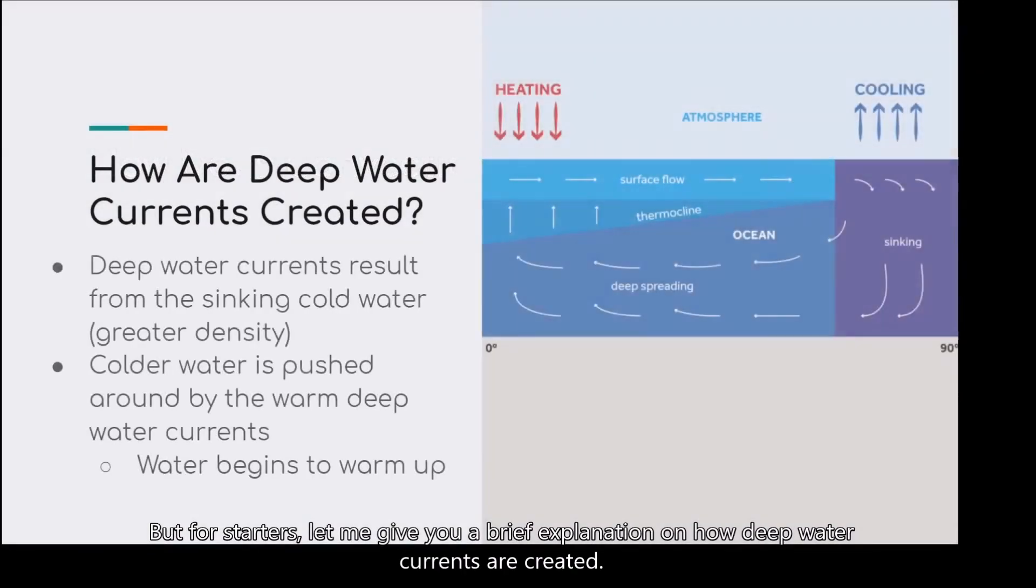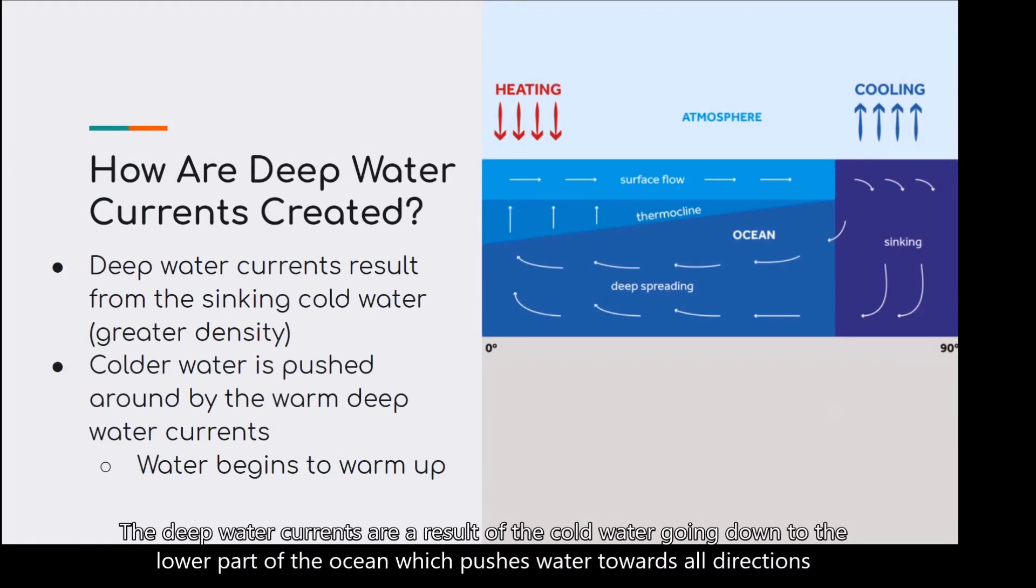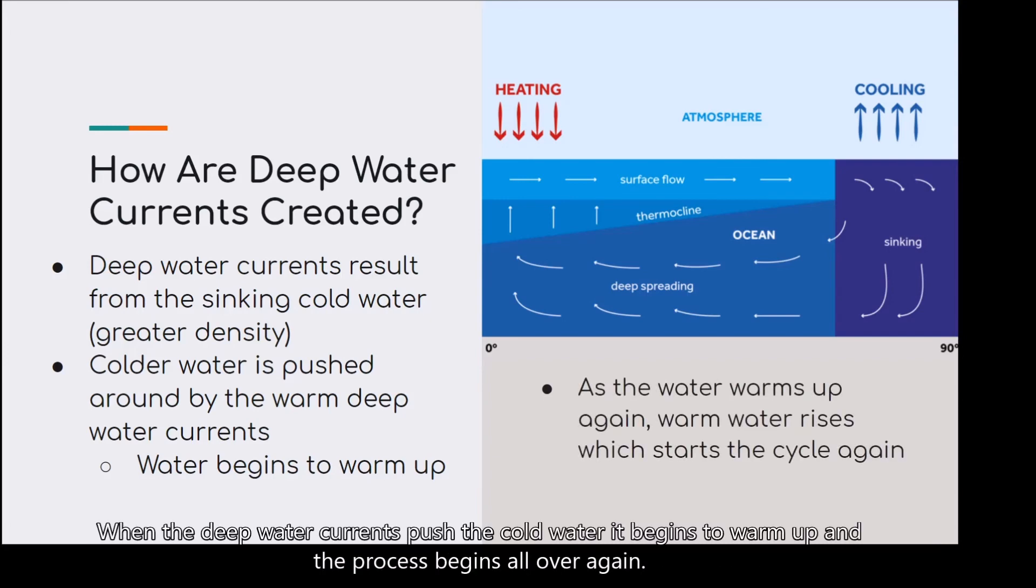Then the deep water currents begin to push the cold water towards the warm water. But for starters, let me give you a brief explanation on how deep water currents are created. The deep water currents are a result of the cold water going down to the lower part of the ocean, which pushes water towards all directions, since cold water, like I said before, has a greater density. When the deep water currents push the cold water, it begins to warm up, and the process begins all over again.